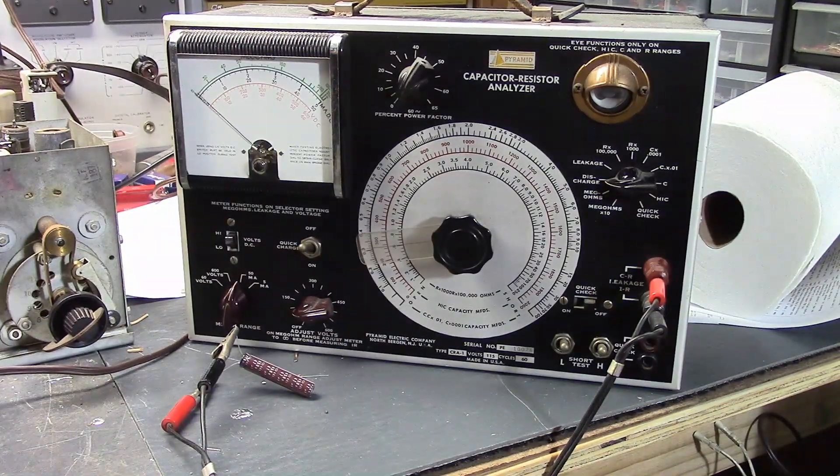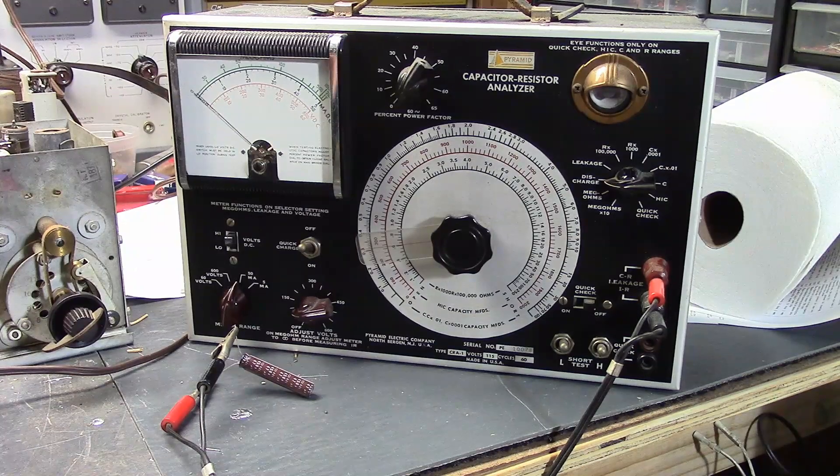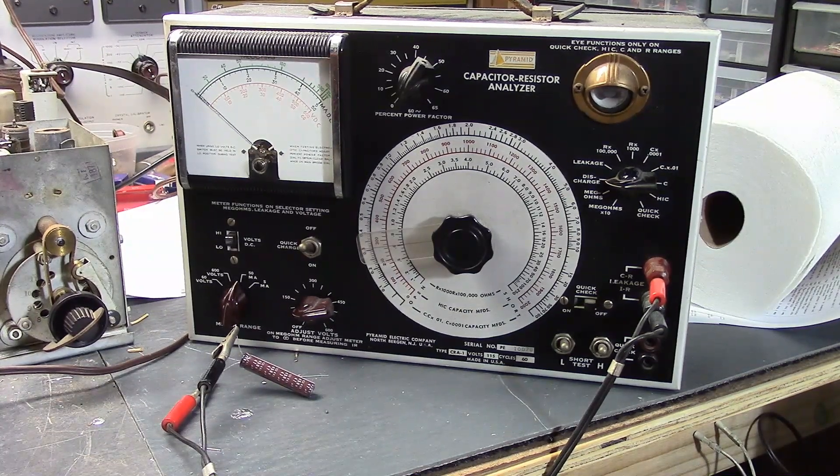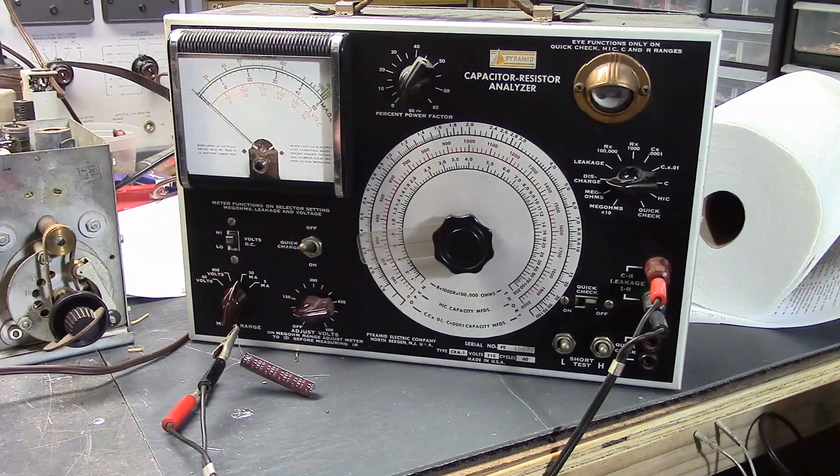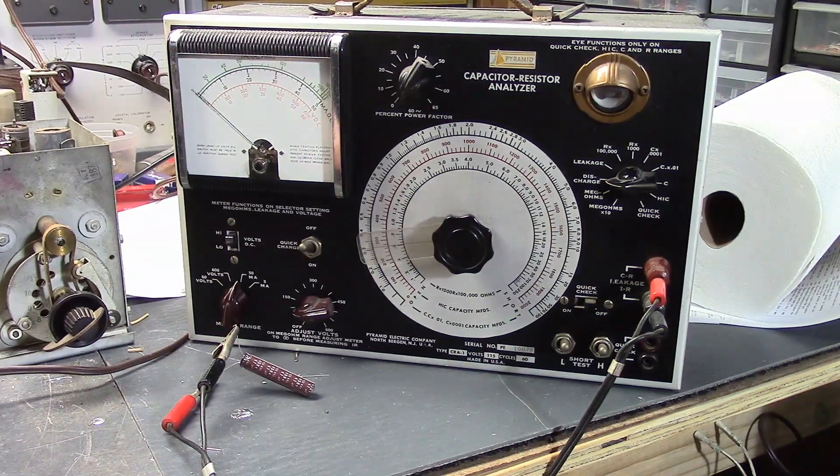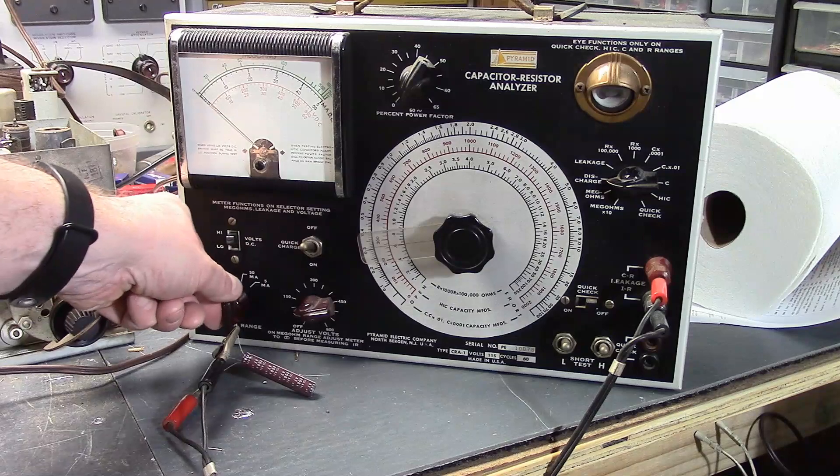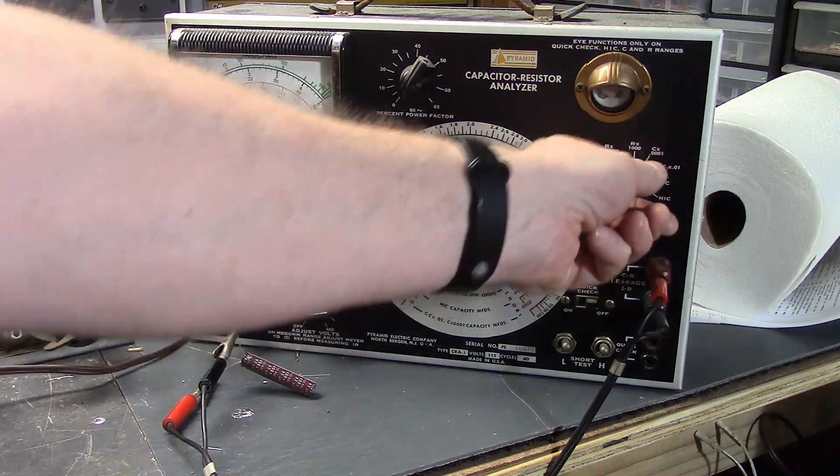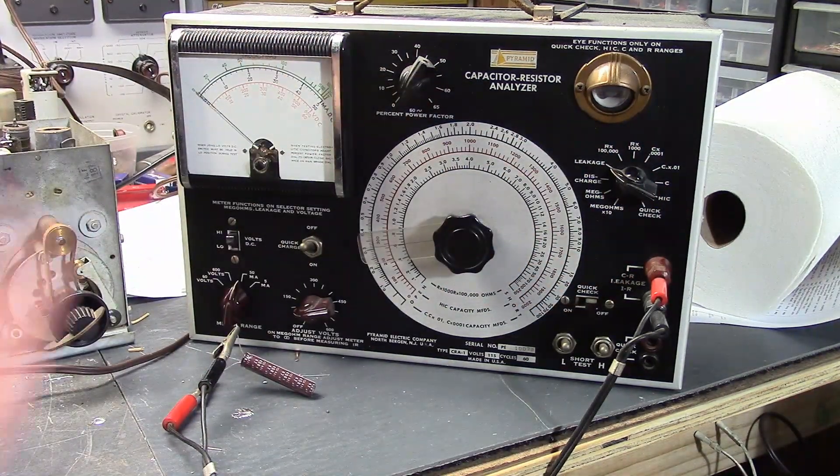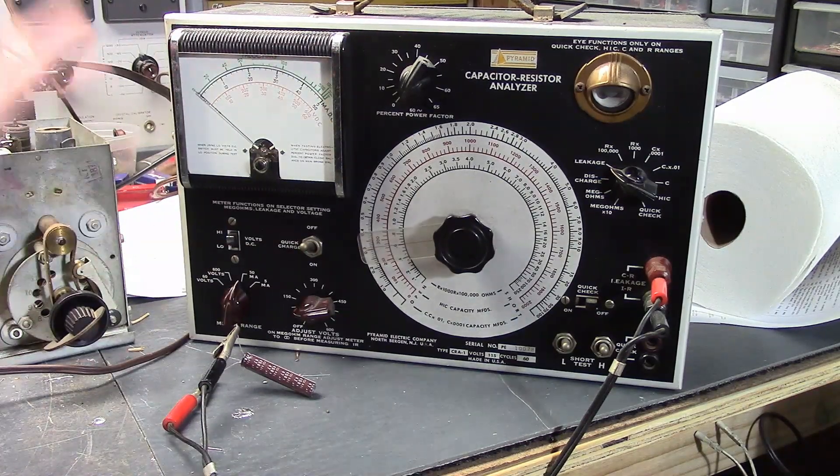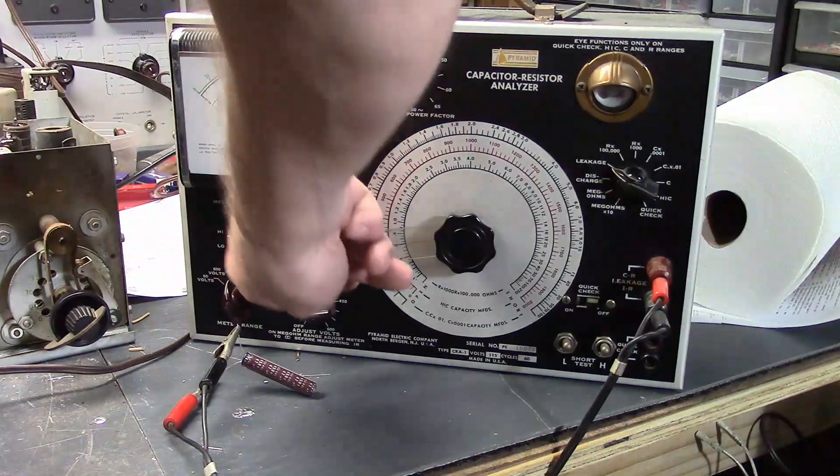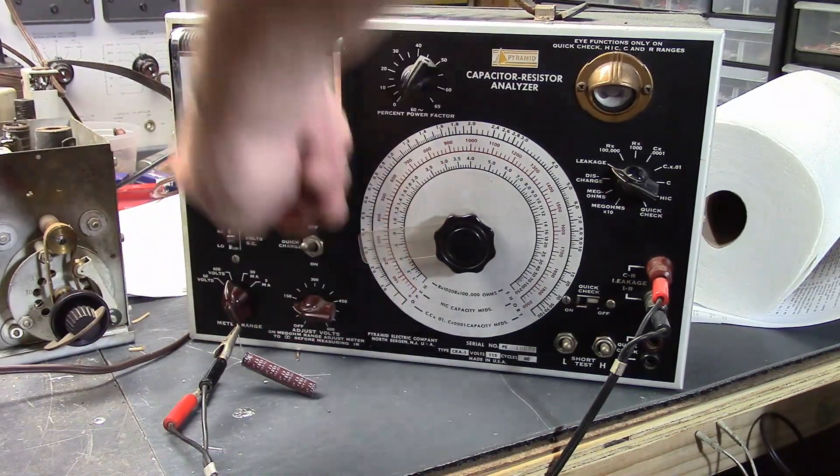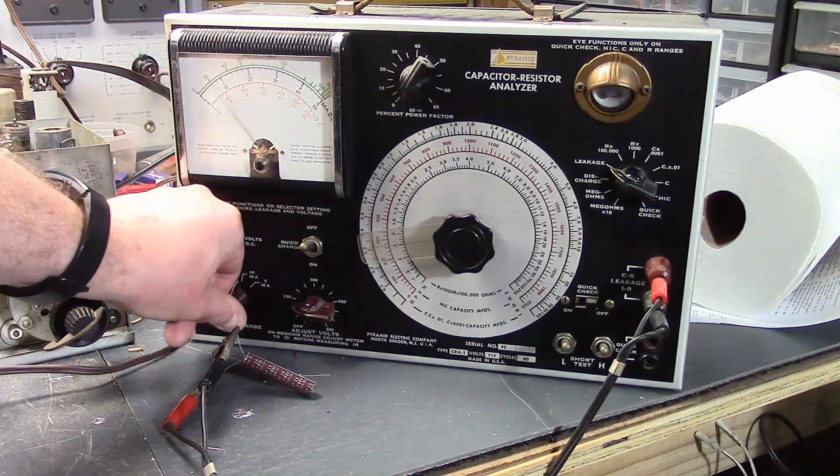Now, even these, even new ones, even a brand new cap, if it's been sitting around for a while, even the manufacturer's data sheet says they do need to form up a little bit before they reach their specified rating. So let's go back to leakage. Notice that current jumped up. That's the capacitor charging up. So let's start at 200 like we did with the other cap.